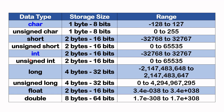Going down the list, we see int for integer. Int requires two bytes of memory — that is 16 bits — and it ranges from minus 32,768 to positive 32,767. Other common data types available are unsigned char, short, unsigned int, and long.